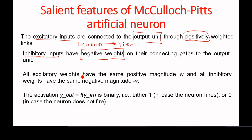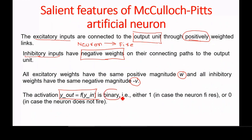Another important feature of this neural model is that all excitatory inputs have the same positive weight value W, and all inhibitory inputs have the same negative weight value minus V. The activation function — Y_out equals f(Y_in) — is a binary function.